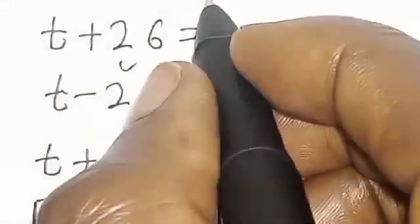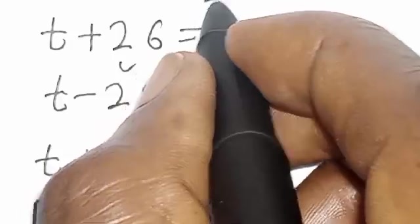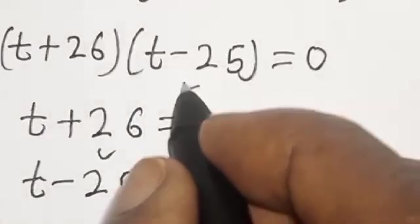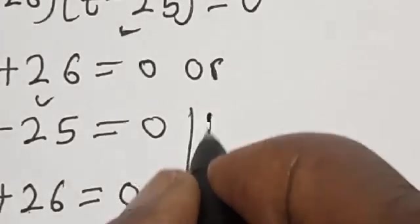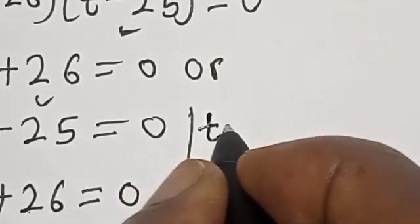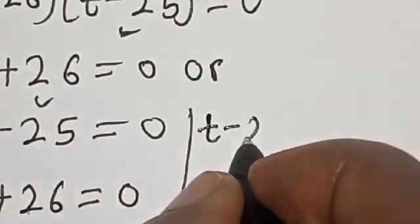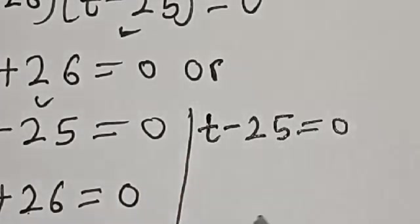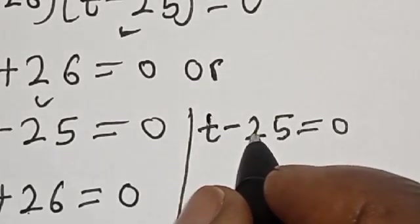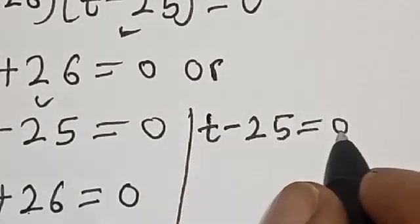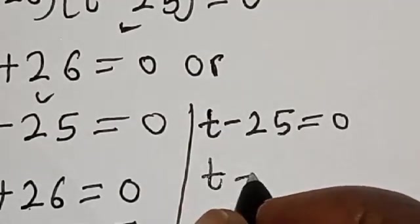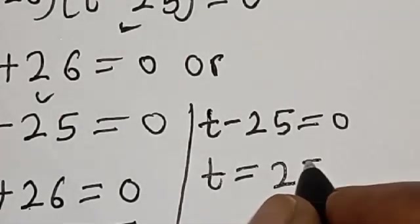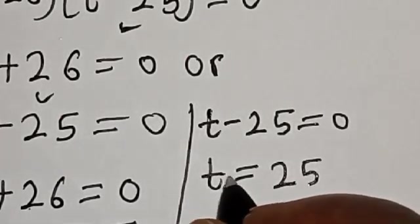From the second case: t minus 25 is equal to 0. Taking 25 to the other side, t is equal to 25. This is t2.